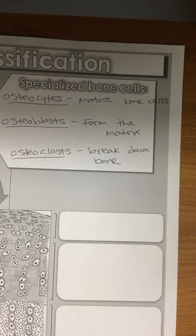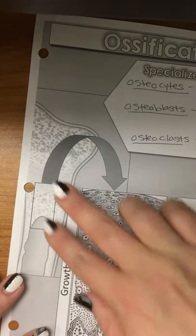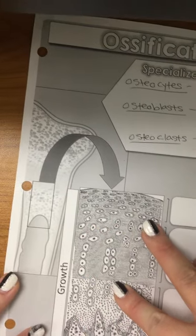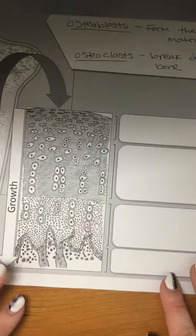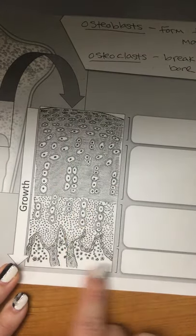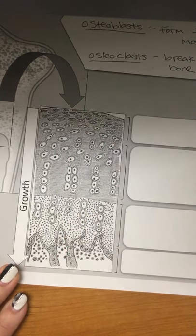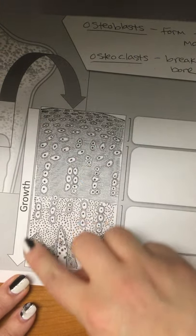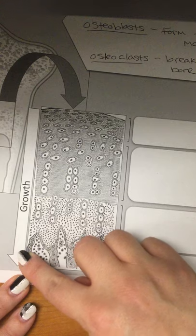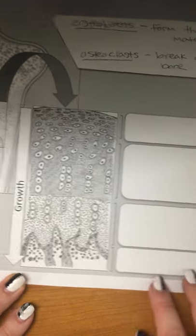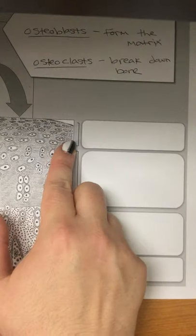So now we're going to look at if we took just this chunk of growth plate and zoomed in on it. What we have here is this is the most cartilage part, and down here is the most bone part. As we go down, we can see that this is the bone growth.